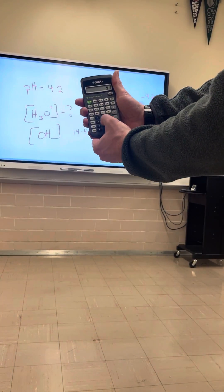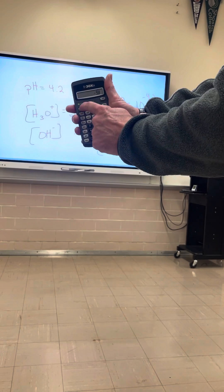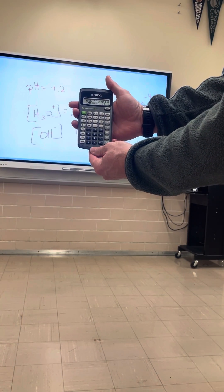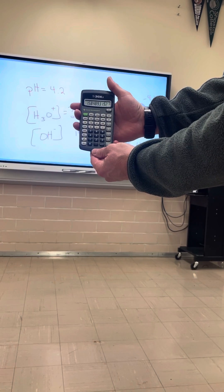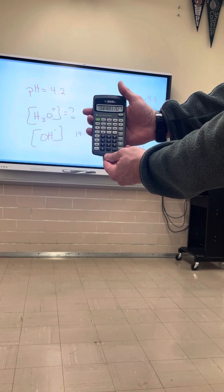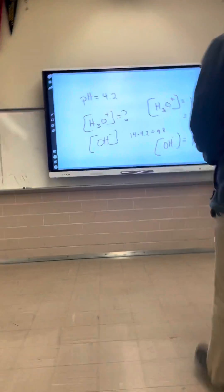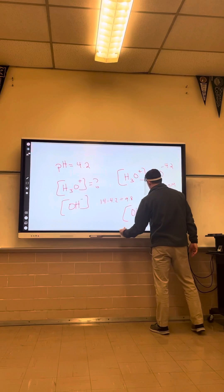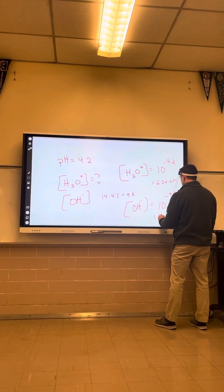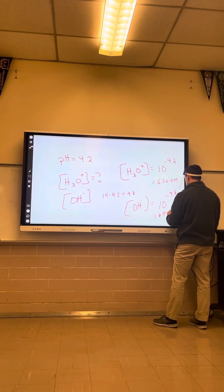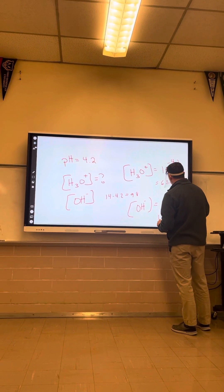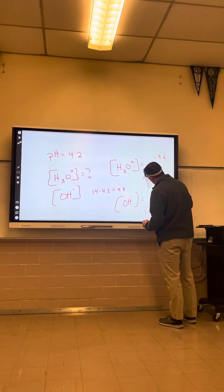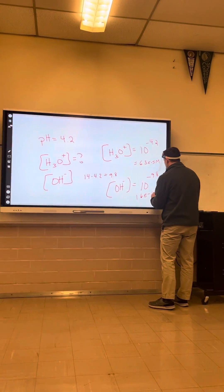9.8 negative sign, second log. There we go. So I get 1.6 E to the negative 10 for that answer. 1.6 E to the negative 10 M.